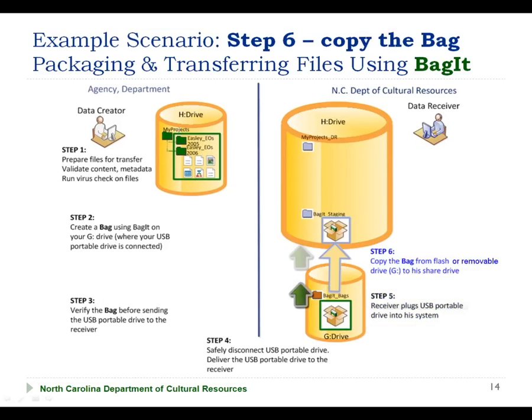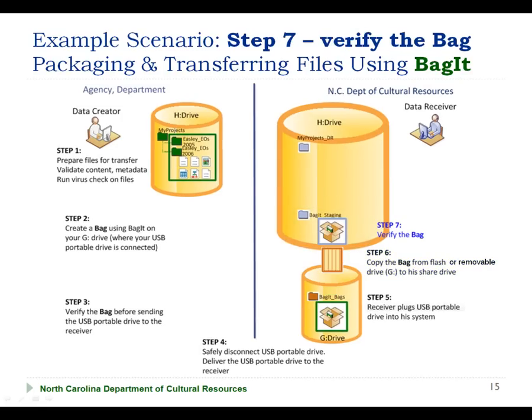In step six, the receiver will copy the bag from the USB attached portable disk to a local staging folder on her local drive. The staging folder provides a safe place to perform any validation and or preparation on the file prior to bringing it into the intended destination directory. In this case, our receiver has a folder called BagIt staging that she will use as her primary staging folder. In step seven, the data receiver is going to verify the bag. This is the critical step that the data receiver will run to ensure that the files have been transferred, are still intact, and are valid. Whether you have one single file or hundreds of files across several folders, BagIt can verify the entire collection of files with the invocation of one command.